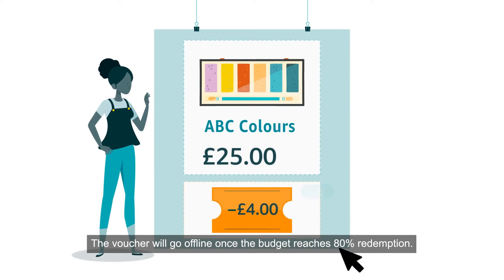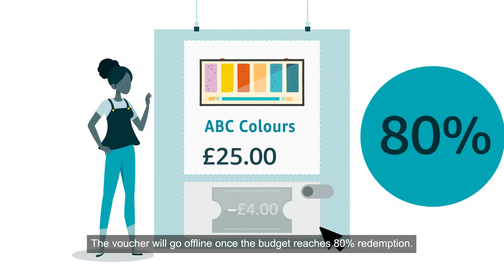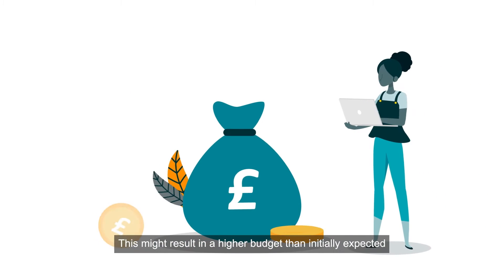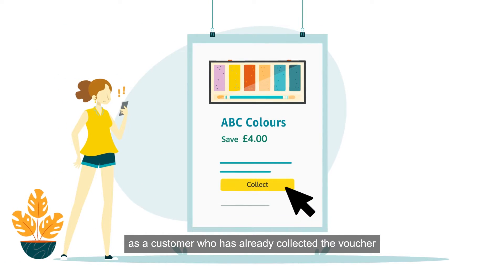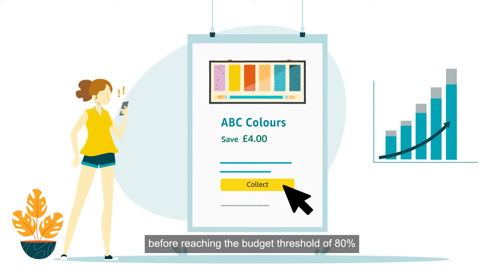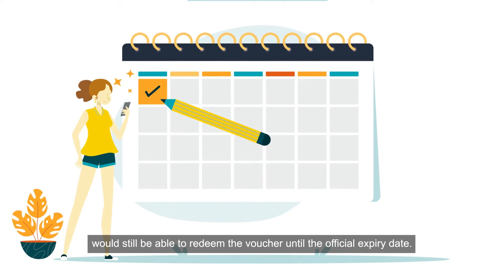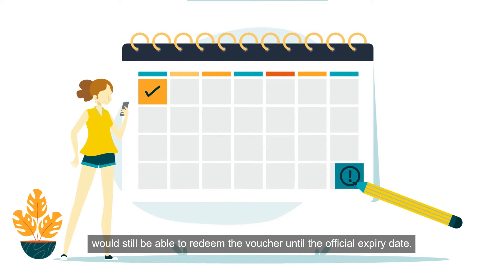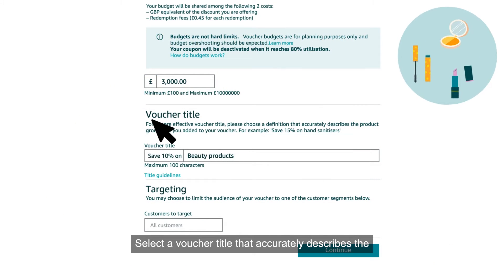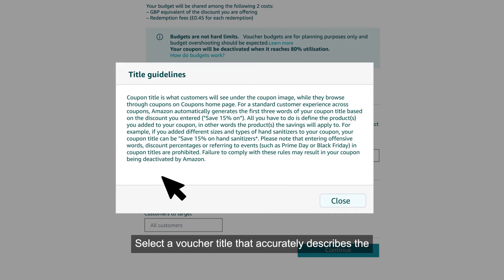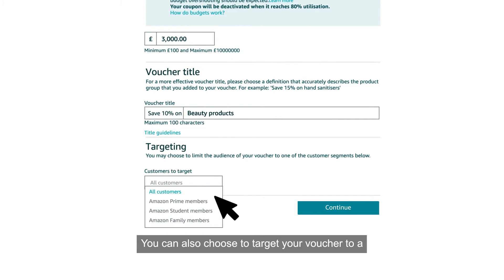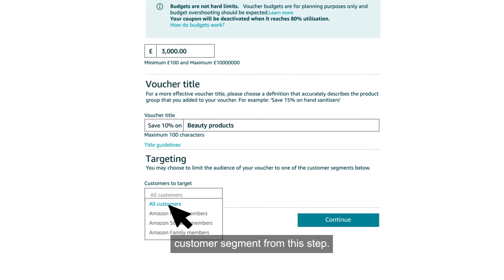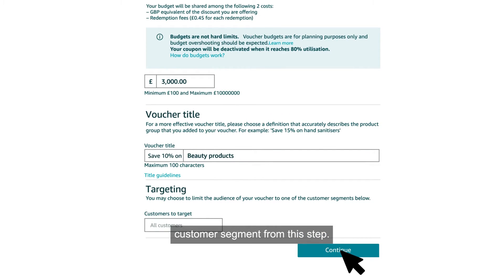The voucher will go offline once the budget reaches 80% redemption. This might result in a higher budget than initially expected, as a customer who has already collected the voucher before reaching the 80% budget threshold would still be able to redeem it until the official expiry date. Select a voucher title that accurately describes the product group, and you can also choose to target your voucher to a customer segment. Click Continue to proceed.